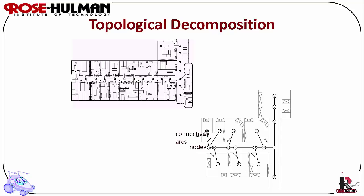Topological decomposition avoids direct measurement of geometric environmental qualities. It concentrates on characteristics that are most relevant to robot localization. Topological representation is a graph that specifies nodes, areas in the world, connectivity arcs, and denotes adjacent pairs of nodes. Adjacency is at the heart of the topological approach.